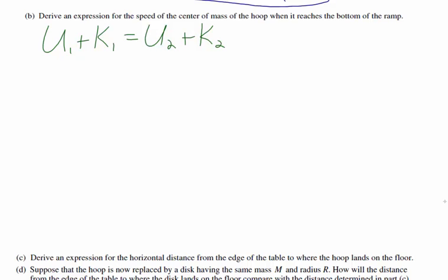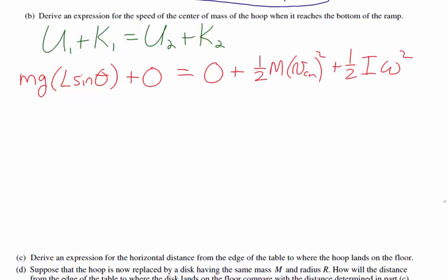Conservation of energy says that the potential energy plus kinetic energy at one point must equal the potential energy plus kinetic energy at any other point. At the beginning, the gravitational potential energy is MgL sine theta, and kinetic energy is zero. At the end, potential energy is zero, and kinetic energy includes both rotational and translational components.